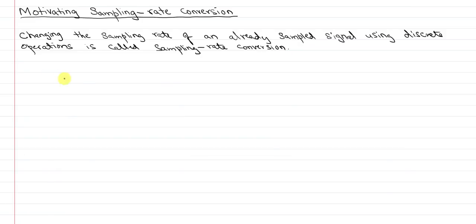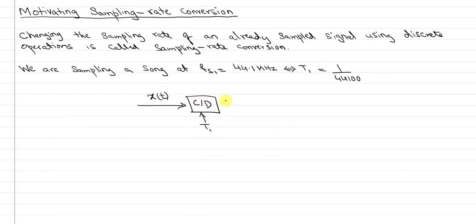Let's look at the example where we are sampling a song at sampling frequency of 44.1 kHz CD quality, which means my sampling time is 1 over 44,100. We got x of t, we had a continuous to discrete block. I used sampling time t1 and I got x[n] equal to x(n*t1).